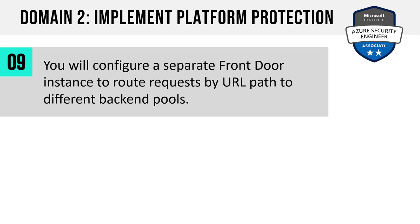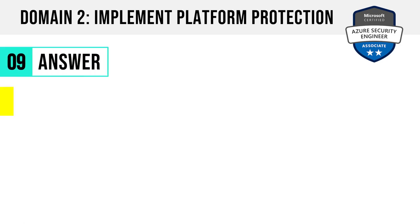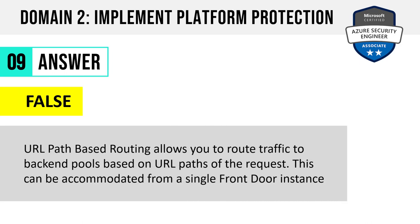Number 9. You will configure a separate front door instance to route requests by URL path to different backend pools. True or false? Front door is a global load balancing solution for HTTPS — you'd use Traffic Manager for non-HTTPS. The answer is false. URL path-based routing allows you to route traffic to backend pools based on URL paths of the request, and this can be accommodated from a single front door instance.